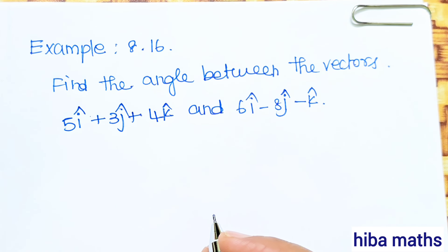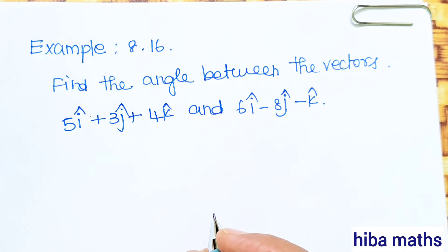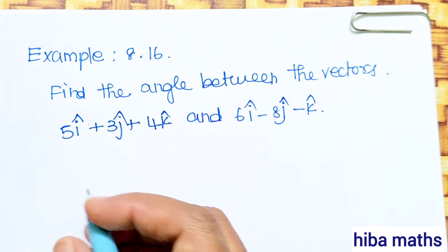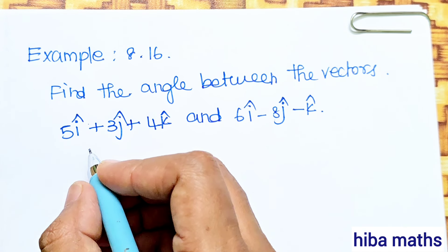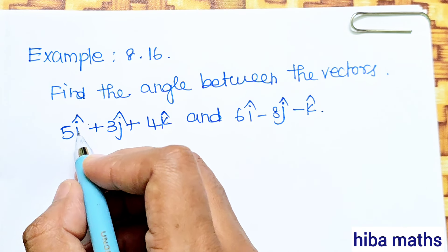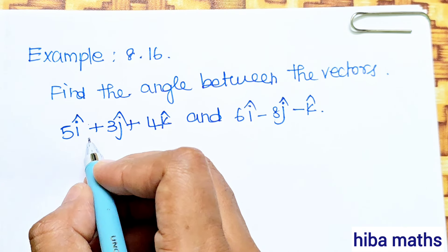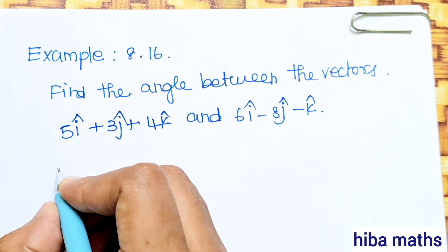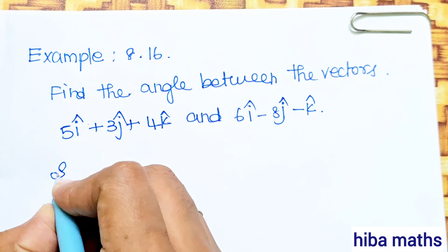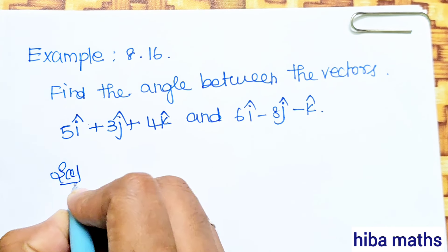For example, you can find the angle between the vectors. You can find two vectors: 5i plus 3j plus 4k and 6i plus 8j minus k. If you have the angle between them, you can substitute into the formula.